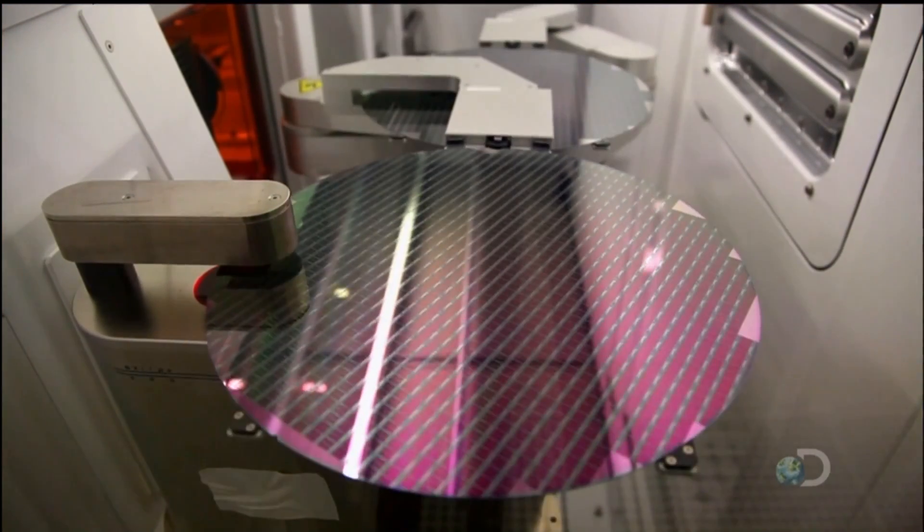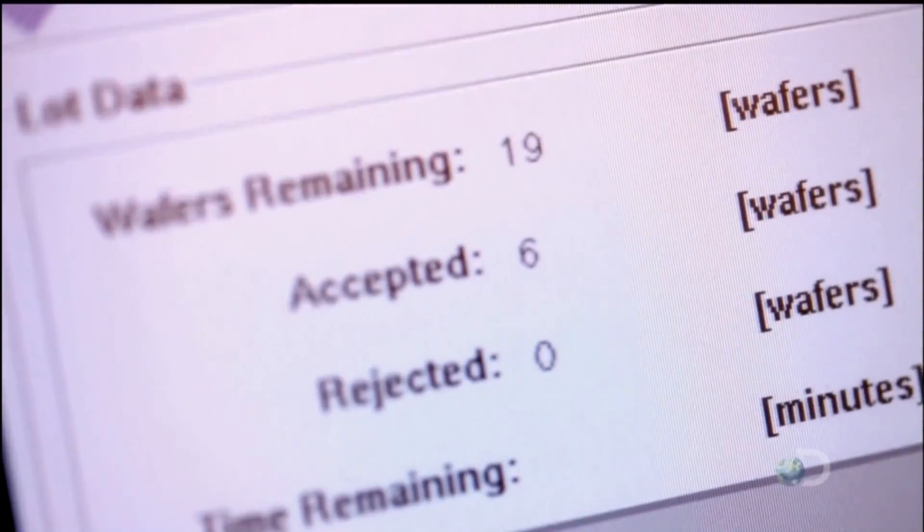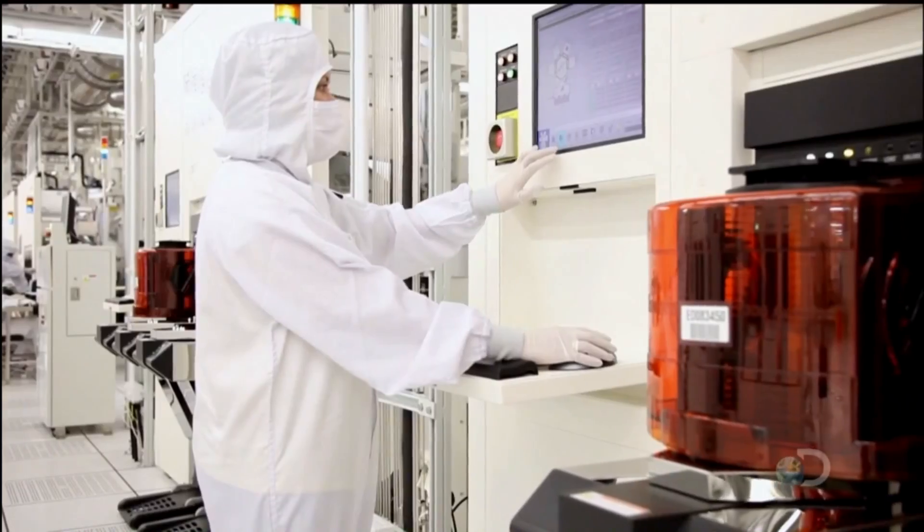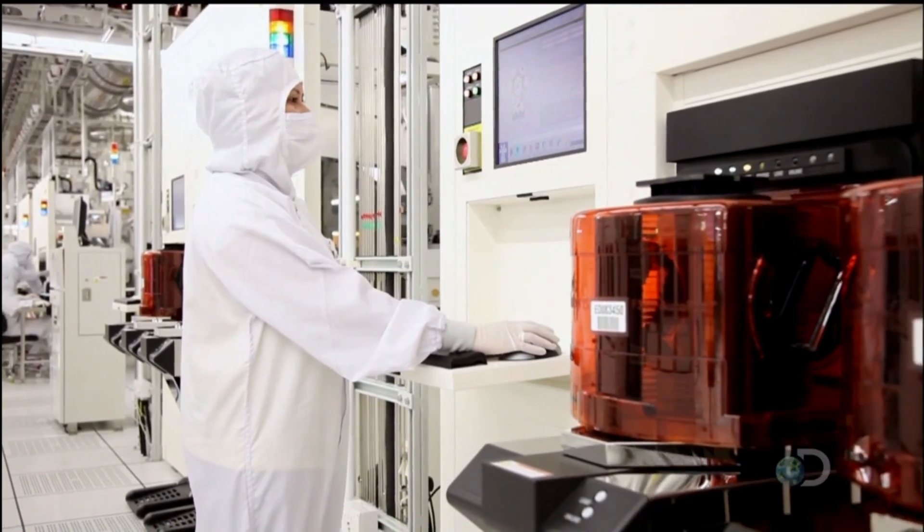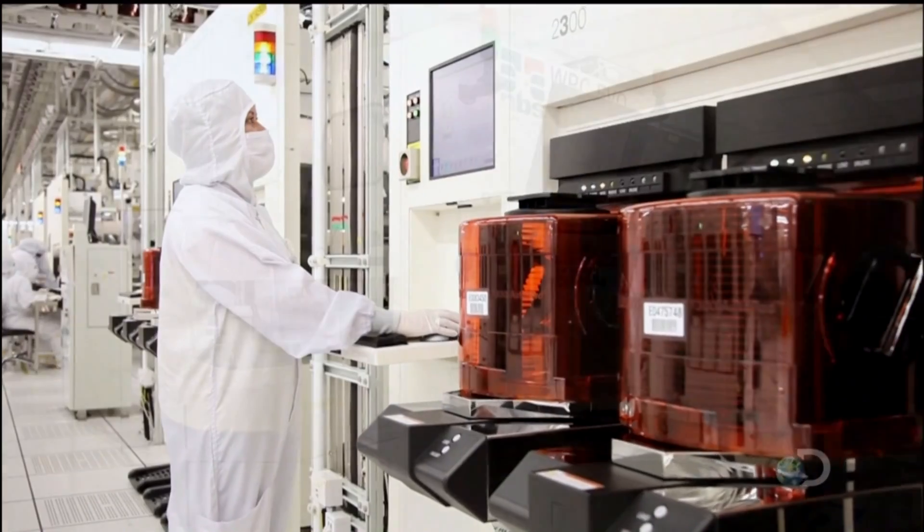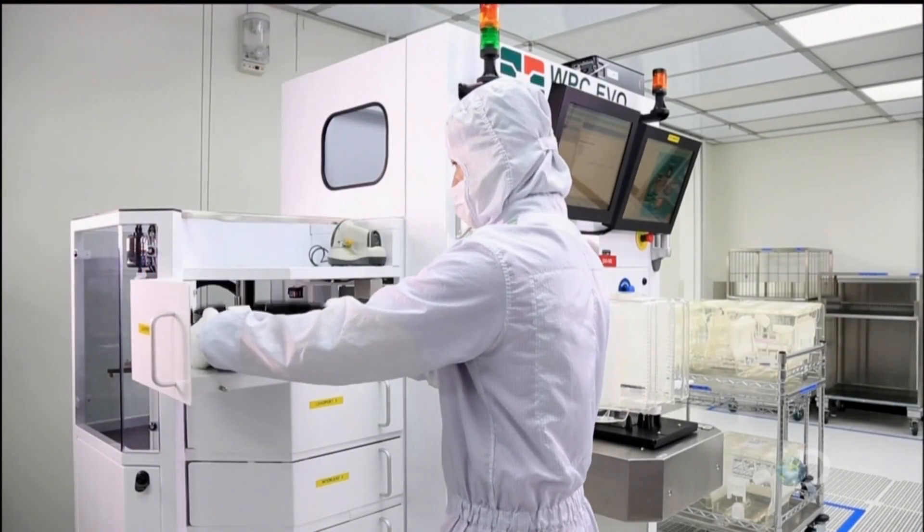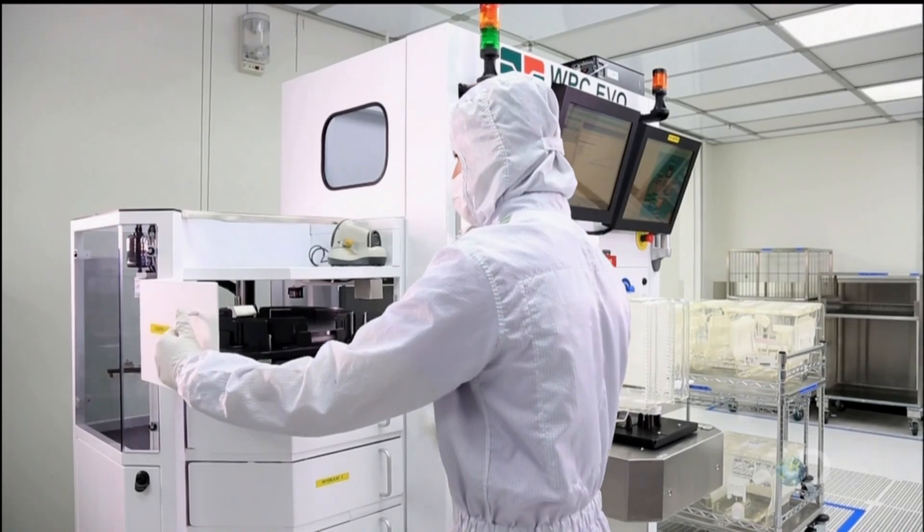After applying each layer, the machine coats the wafer with a light-sensitive fluid, then flashes UV light onto it through a glass stencil of the electrical circuitry pattern. In the areas where the fluid is exposed to the light, the chemicals break down and dissolve. Where the fluid was shielded from light by the stencil, the materials remain intact, effectively printing the circuitry pattern on the wafer.